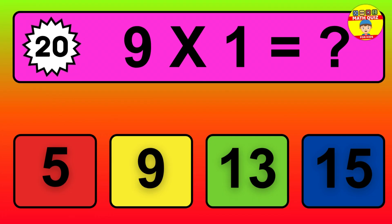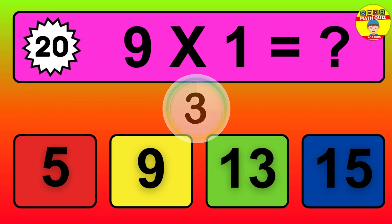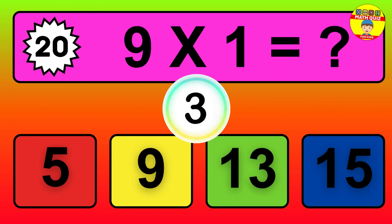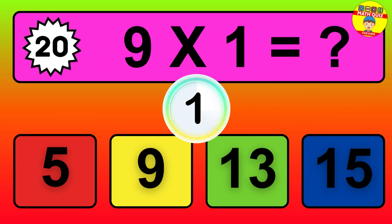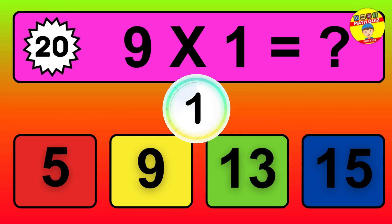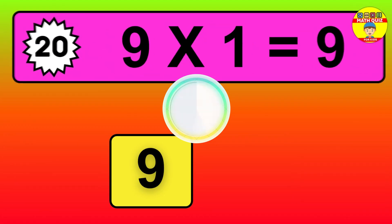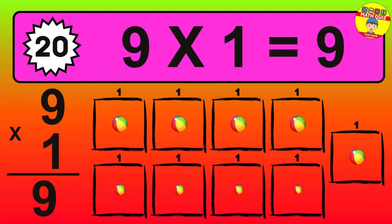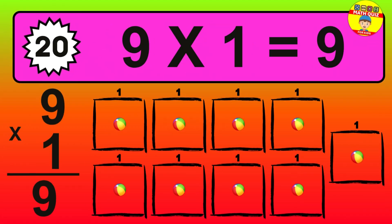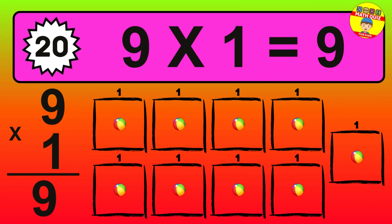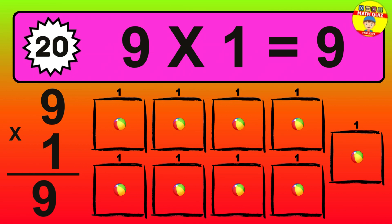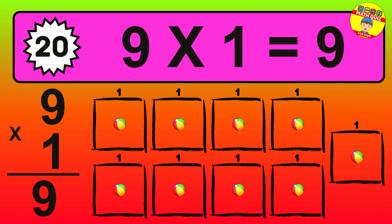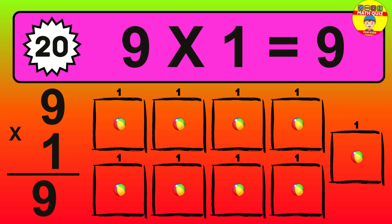Question 20. 9 times 1 equals what? The answer is 9 times 1 is 9. To calculate, we have 9 groups with 1 ball each one. So, how many balls do we have? 9 balls.